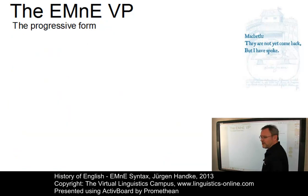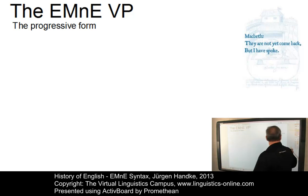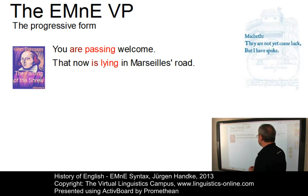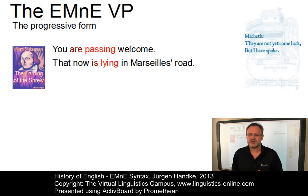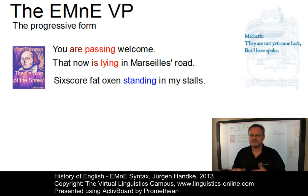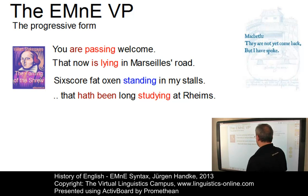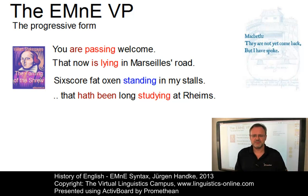The progressive form began to appear in Middle English and became common during the early modern English period. Here are some examples: 'Your passing welcome' and 'That note is lying in Marseilles road' — the typical use. The present participle itself was primarily used as a non-finite clause; today we would say a gerund: 'Six score fat oxen standing in my stalls.' Also, the combination of progressive form and perfect aspect can be found in early modern English: 'that have been long studying at Rheims.' So here we have three variants of using the progressive aspect in early modern English.